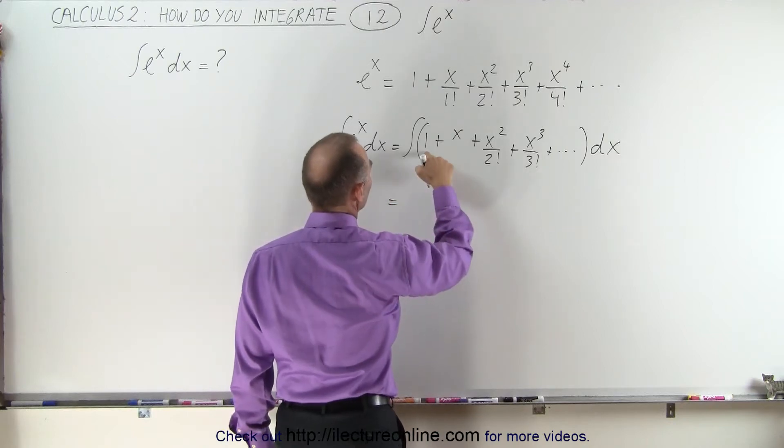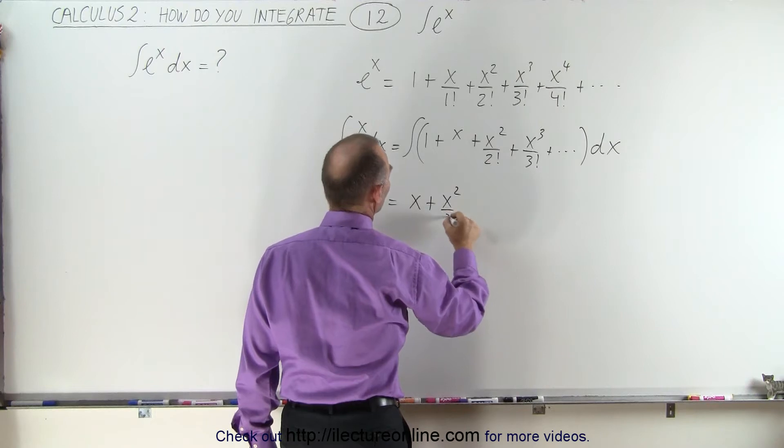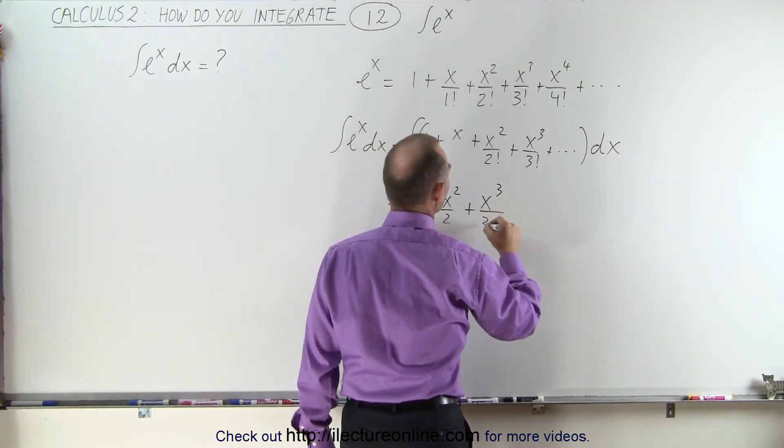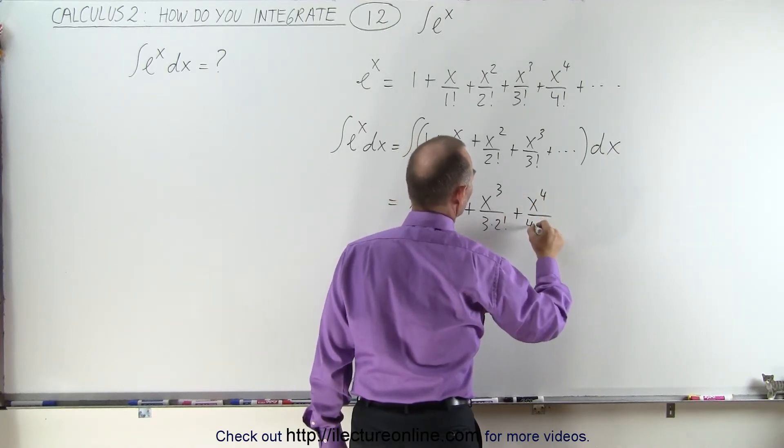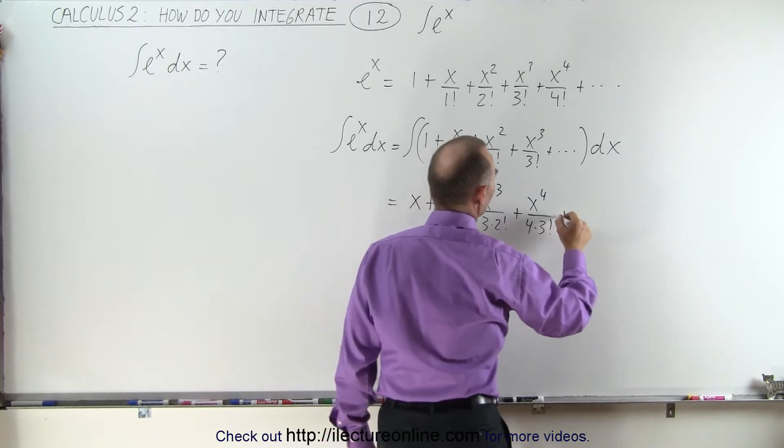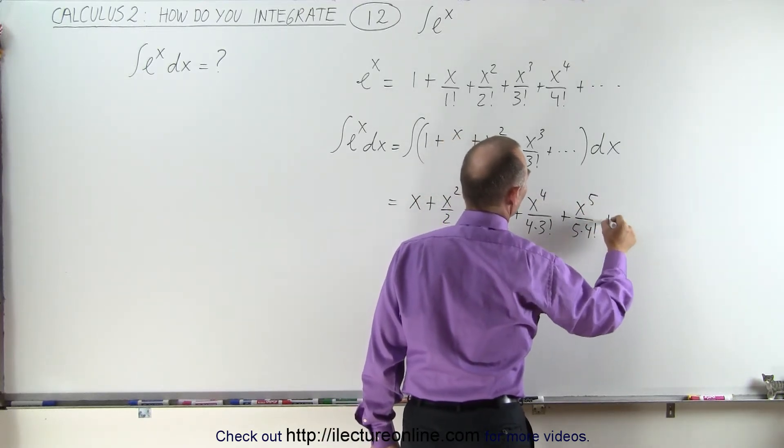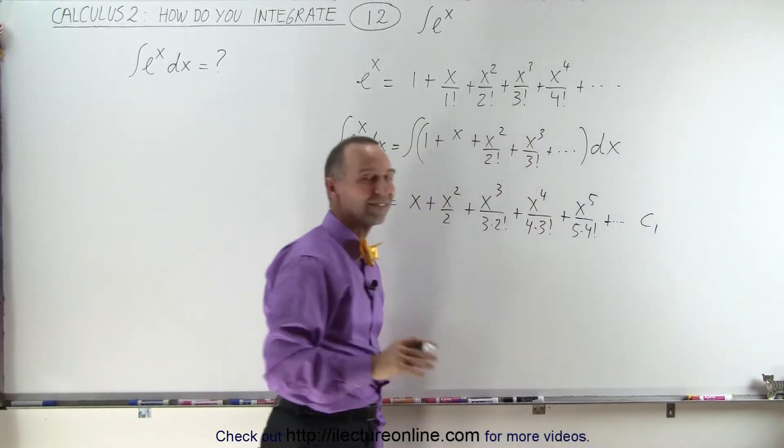This is equal to, integrating term by term: x plus x squared over 2 plus x cubed over 3 times 2 factorial, plus x to the 4th over 4 times 3 factorial, plus x to the 5th over 5 times 4 factorial, and so forth, plus a constant of integration C1.